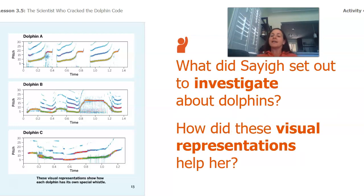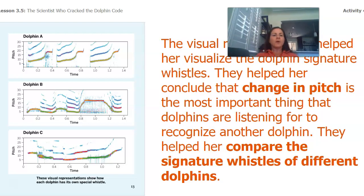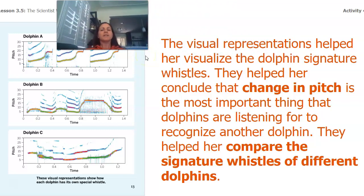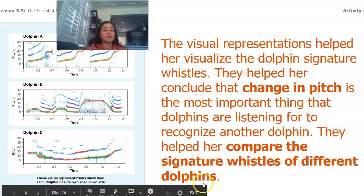So what did Sayig set out to investigate about dolphins, and how did these visual representations help her? She wanted to investigate how dolphins recognized each other's calls. Those visual representations helped her visualize their signature whistles, helped her conclude that a change in pitch is the most important thing that dolphins are listening for to recognize another dolphin, and helped her compare the signature whistles of different dolphins. We can look at all three and tell these are very different pitches — very different sounds and signature whistles.